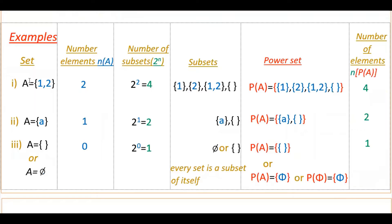For example, in the first set there are two elements: 1 and 2. So n(A) is equal to 2. You can write the number of subsets for set A as 2 to the power of n, that is 2 squared, which is equal to 4. So you can write four subsets for set A.